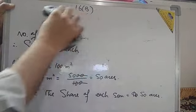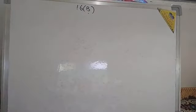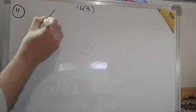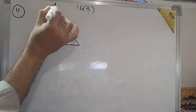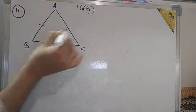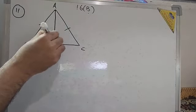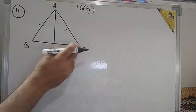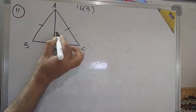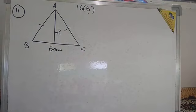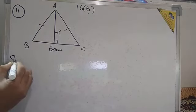Let me show the figure for question 11. There is a triangular flag ABC in which two sides are equal. An altitude is drawn from the tip of this flag to the third side. The third side has a length of 60 cm. We need to find the perpendicular distance.